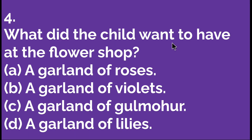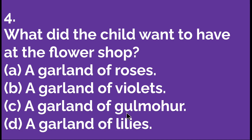What did the child want to have at the flower shop? Option A: a garland of roses. Option B: a garland of violets. Option C: a garland of gulmohar. Option D: a garland of lilies. C is the right answer — a garland of gulmohar. So let's move to the next question.